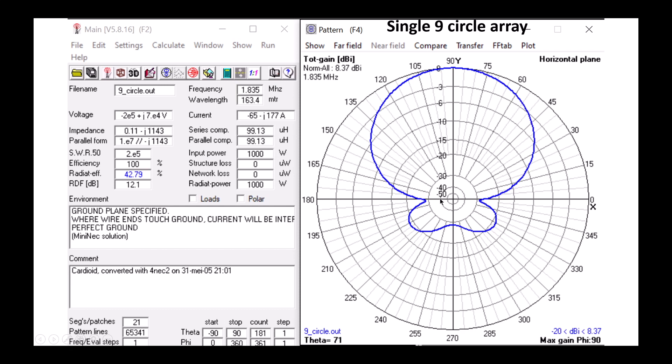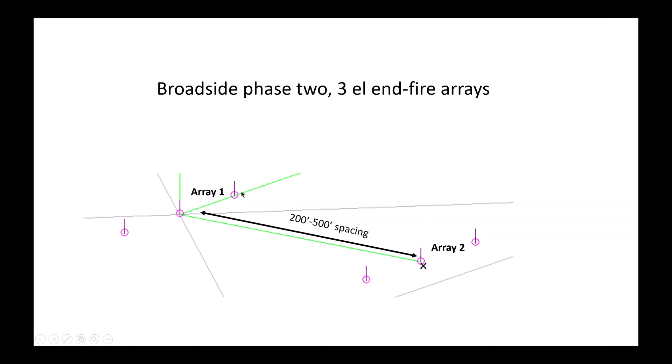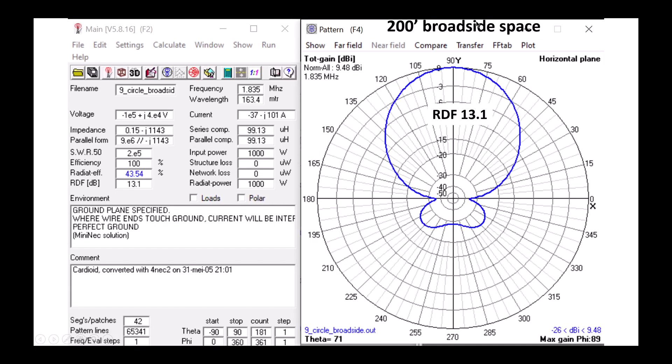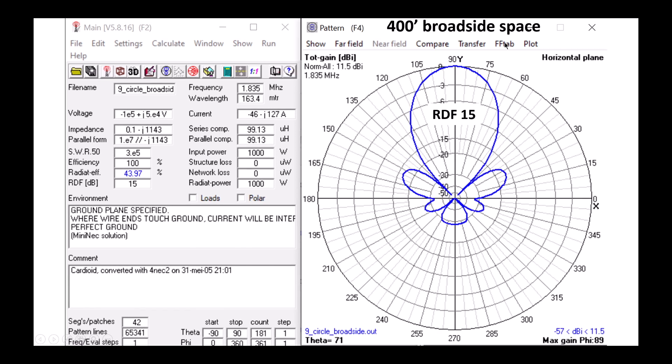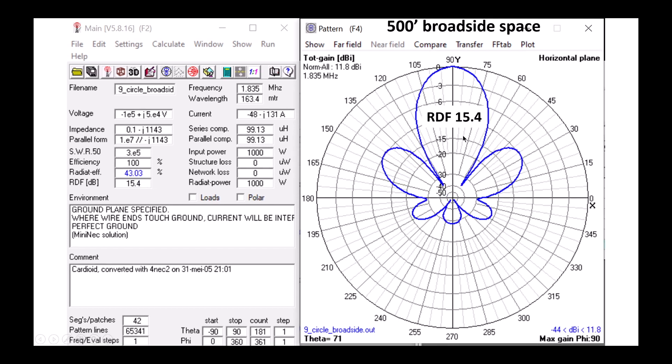Okay, well what if we take two of those arrays, two three-element arrays, and broadside them, space them anywhere from 200 to 500 feet apart? Well, what do we get? Here's 200 foot spacing. We enhance the RDF. It goes up to 13.2. If we space them 300 feet apart, we get 14.1 dB of RDF. If we space them 400 feet apart, we're 15 dB. And up to 500 feet apart, the RDF has shot up to a spectacular 15.4 dB. Pretty hot antenna.